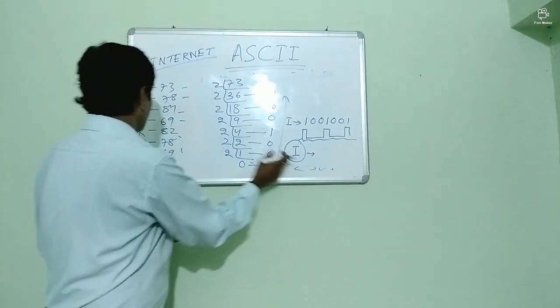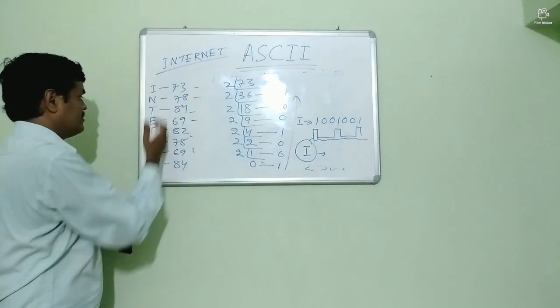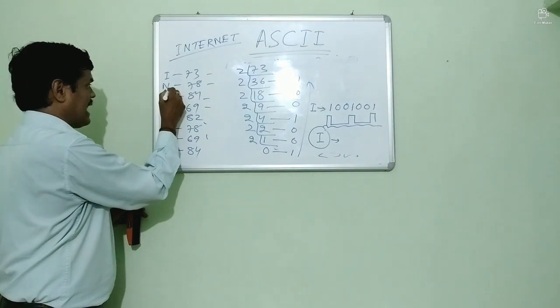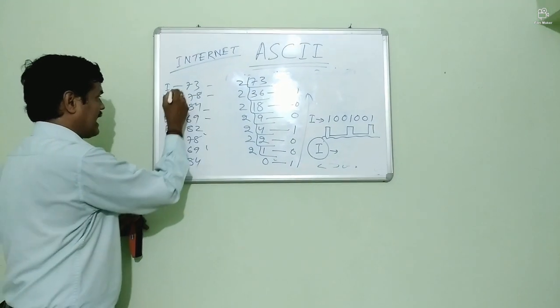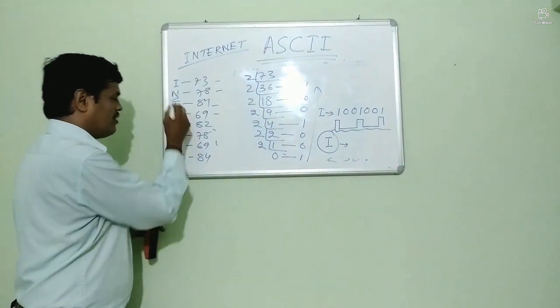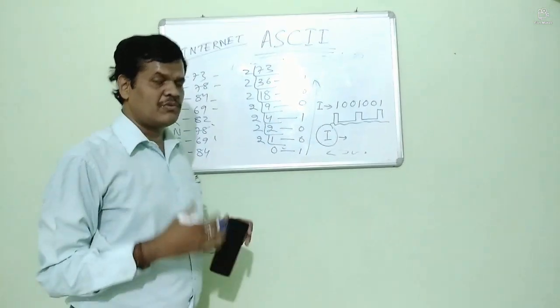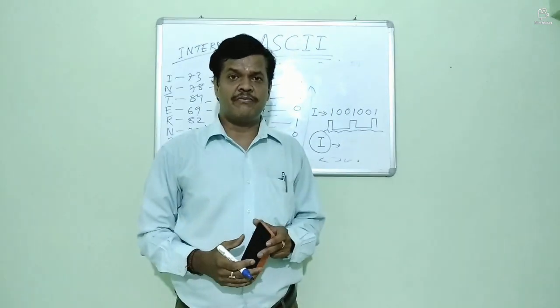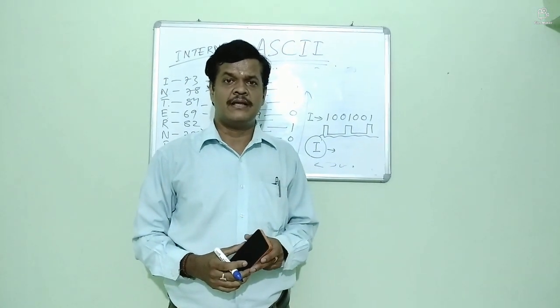In this way, we can calculate and convert all letters — I, A, P, E — all these letters can be converted to their corresponding binary values.